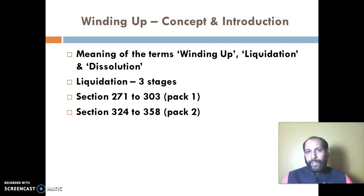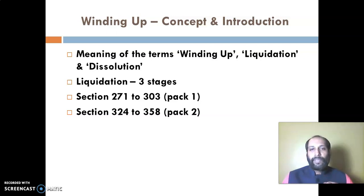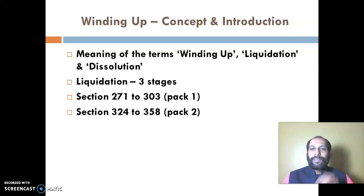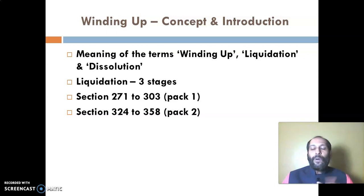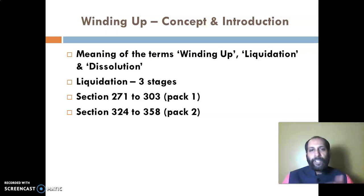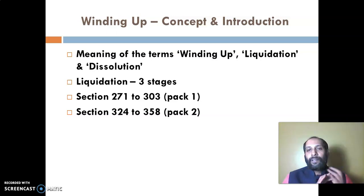Coming to the third stage - dissolution. Even though the term is usually used in partnership, in the Companies Act also we have a definite term called dissolution, which is the final stage of ending the life of a company. By dissolution, the legal status of the company comes to an end by the fiction of law. So the whole winding up process is divided into three stages: the first stage is winding up, the second stage is liquidation, and the third stage is dissolution. The legal provisions of the Companies Act 2013 for CA Final exam purpose are divided into two parts: Section 271 to 303 and Section 324 to 358. I request students who find this chapter difficult to study at least the selected areas to understand the crux of winding up.